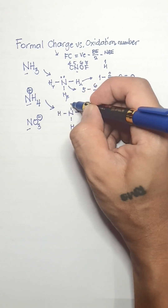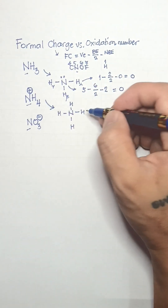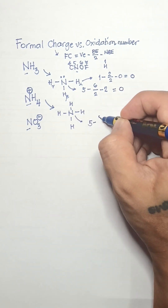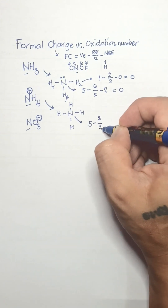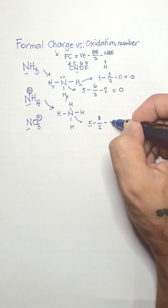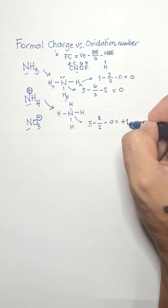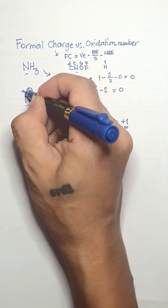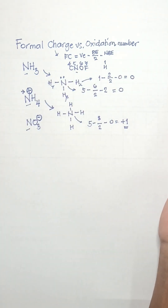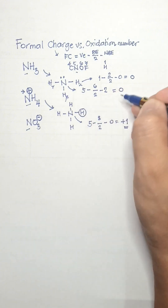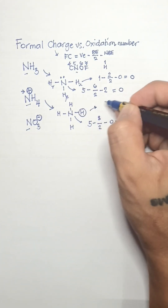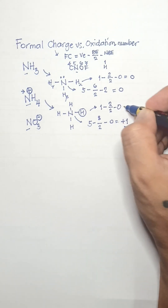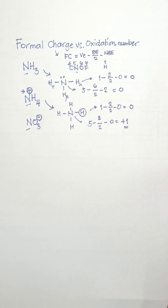In the case of ammonium ion, the central atom is again nitrogen, surrounded by hydrogen atoms singly bonded to it. Nitrogen has 5 valence electrons, minus 8 bonding electrons divided by 2, minus 0 non-bonding electrons — giving a formal charge of positive 1. That is why ammonium ion has a net charge of positive 1. For the hydrogen atoms, their formal charge is 0, same as in ammonia.